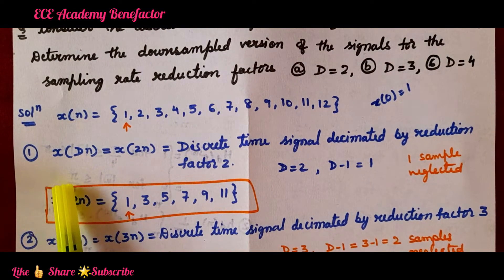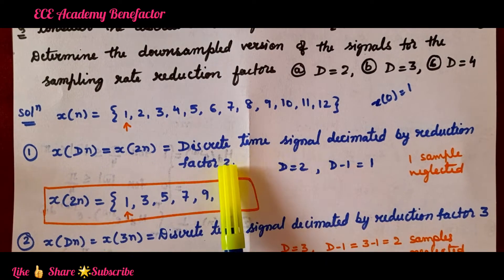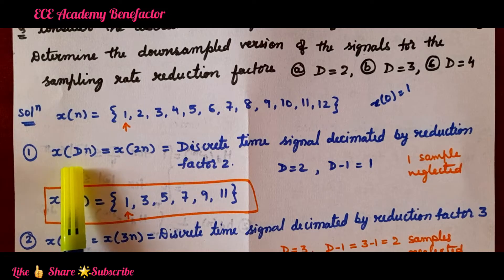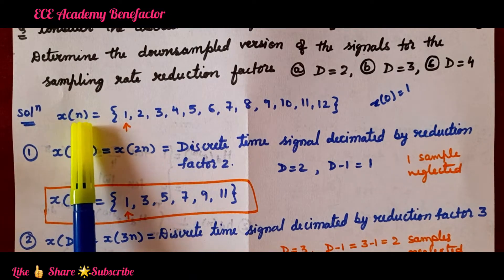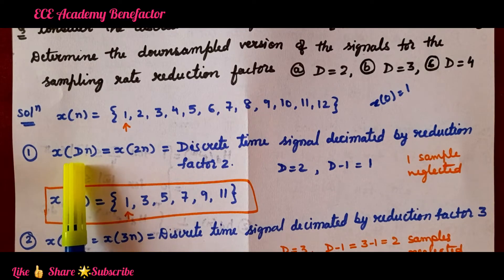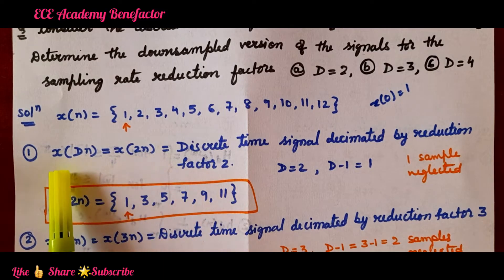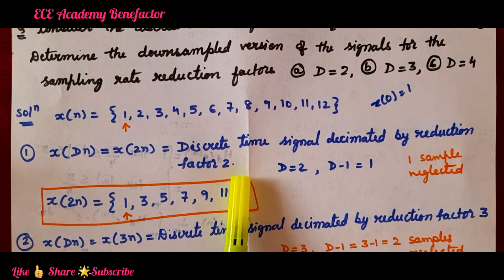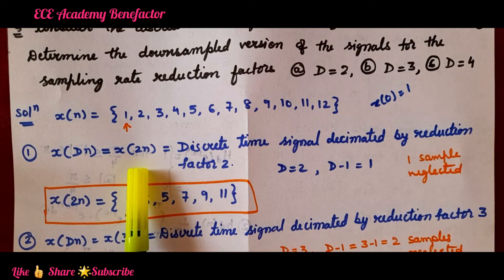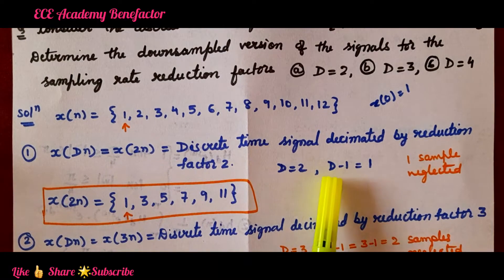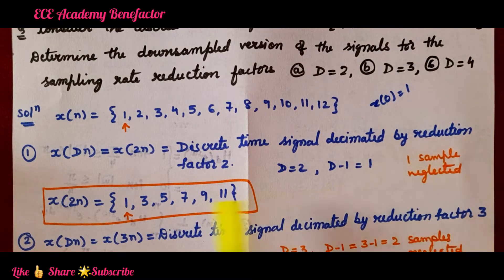First, we have to find the discrete time signal decimated by a reduction factor of 2. Decimation is symbolically represented as x(Dn). With D equal to 2, x(Dn) equals x(2n). To find the decimated signal with D equal to 2, we neglect D minus 1 samples, which is 2 minus 1 equals 1 sample neglected after every sample.